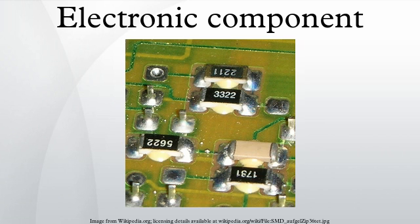Electronic components have two or more electrical terminals — aside from antennas which may only have one terminal. These leads connect, usually soldered to a printed circuit board, to create an electronic circuit with a particular function. Basic electronic components may be packaged discretely, as arrays or networks of like components, or integrated inside packages such as semiconductor integrated circuits, hybrid integrated circuits, or thick film devices.